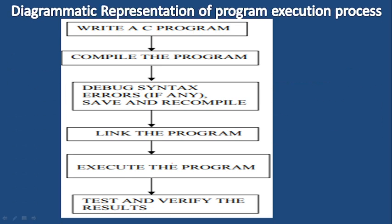This is our diagrammatic representation of the program execution process. First, write a C program. Then compile the program. If you have some errors during compilation — like syntax errors — you debug them, save, and recompile. For example, if you have a statement where you did not put a semicolon or something like that, you will get an error. After fixing it, you save again and recompile.